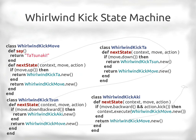Then there's the whirlwind kick — four states. We go to the Ta state; press up, then down to go to the Sun state; then down-backward; then backward with a kick to execute the move. Otherwise you don't. This one is hard to break unless you have a joystick — the NES controllers were tough for it.